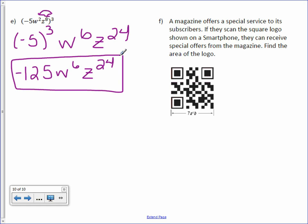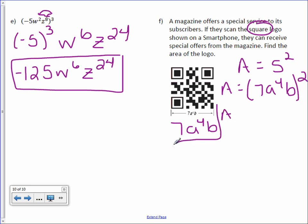Letter F. A magazine offers a special service to its subscribers. If they scan the square logo shown on a smartphone, they can receive special offers from the magazine. Find the area of the logo. Now this is difficult to read, but it is 7a to the 4th b. Area of a square is your side length squared. So the area would be 7a to the 4th b squared. Distribute that to 7a to the 8th b squared.